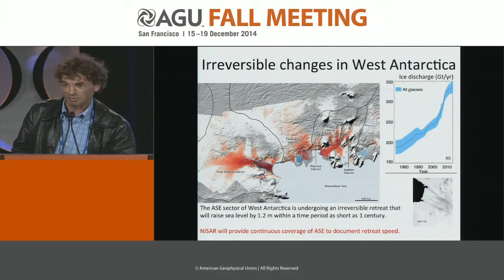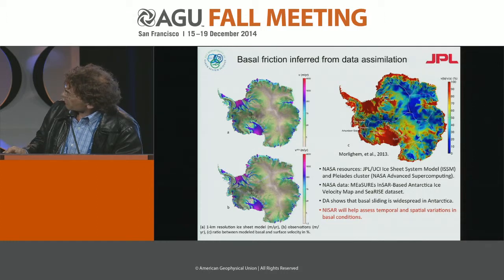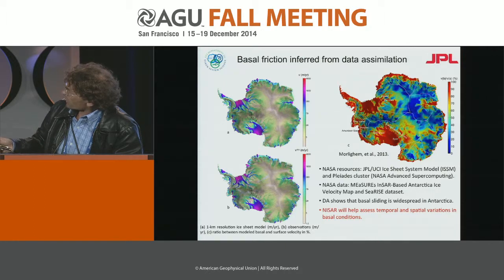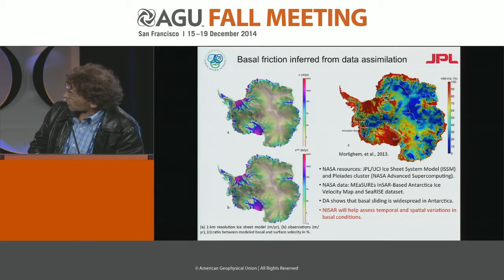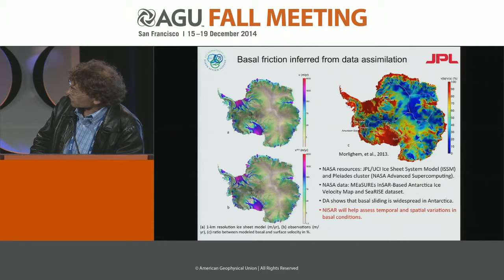It could be two centuries or nine centuries — it depends on the model — but at least one study showed it could happen in one century. So it's extremely important to keep an eye on what's happening in this part of Antarctica. This is a map of basal friction, the result of work by Morlighem et al., using NASA resources, the ISSM model, and the Pleiades cluster. It's a map inferred at a kilometer resolution — the first time we can look at basal friction underneath the ice sheet. Areas shown in red are where the ice is sliding very fast with no basal friction, and these areas are quite extensive. The big question is: can we repeat that? NISAR will be able to provide the data to make these calculations more repeatable over time, so we can answer whether basal friction can change with time.